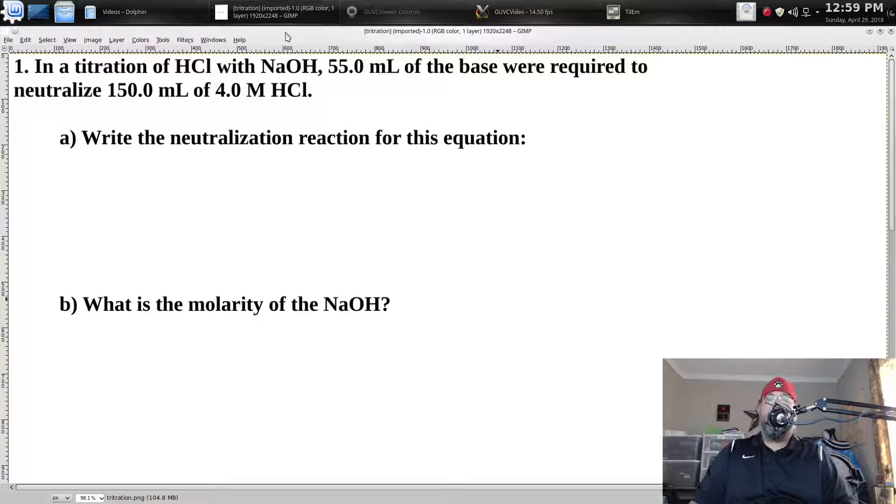Alright guys, welcome back. I'm here to do a video on titrations, or you may call them neutralization reactions. In a titration and a neutralization reaction, you're taking an acid, you're taking a base, you're mixing them together, and you're trying to neutralize them. Meaning you're trying to make them pH neutral, which is 7. And when you do this, when you mix an acid and a base together to neutralize them, you make two things: you make salt and you make water.